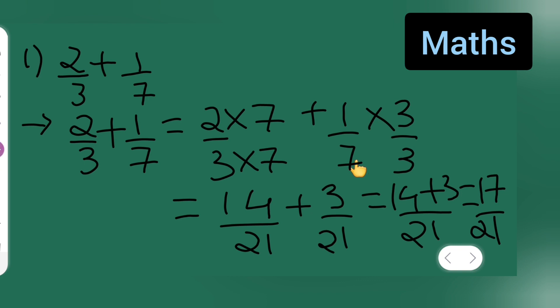So what is the answer you are getting? 17 upon 21 is your answer. So I hope you all have understood how to add when the denominators are different. First you have to take the LCM, see what denominator you should get. I hope you all have understood, and thanks for watching.